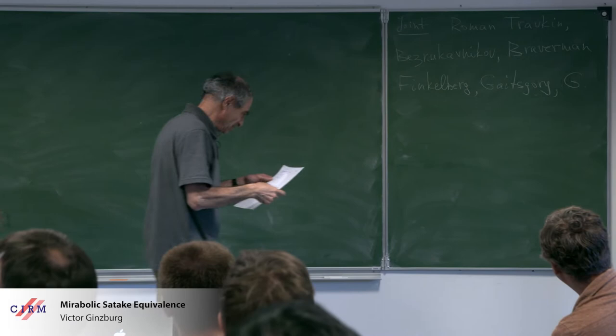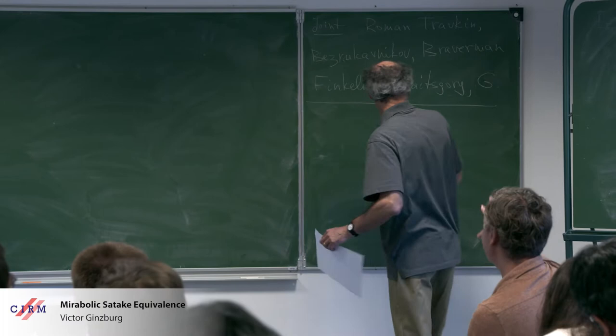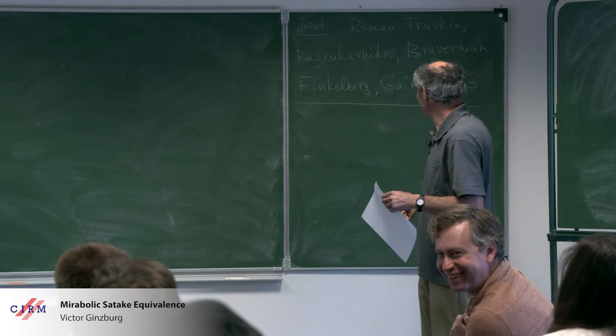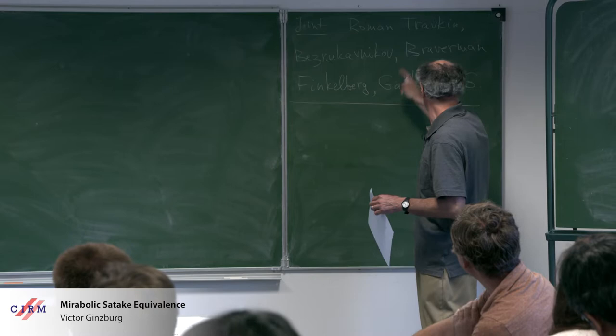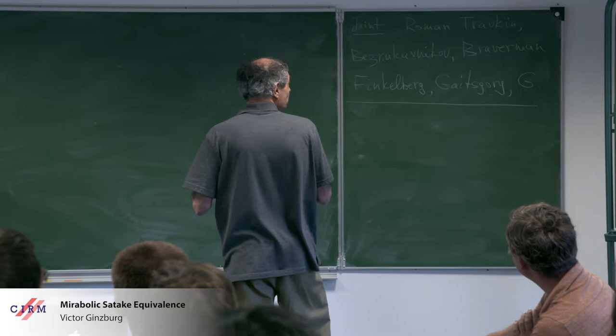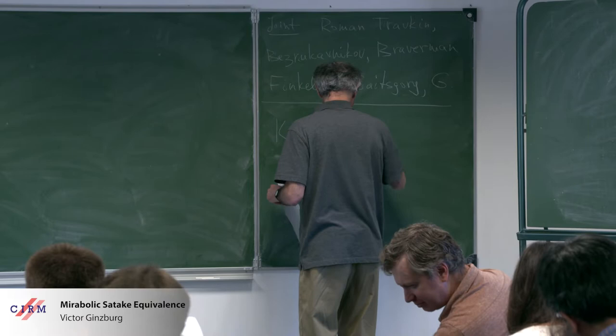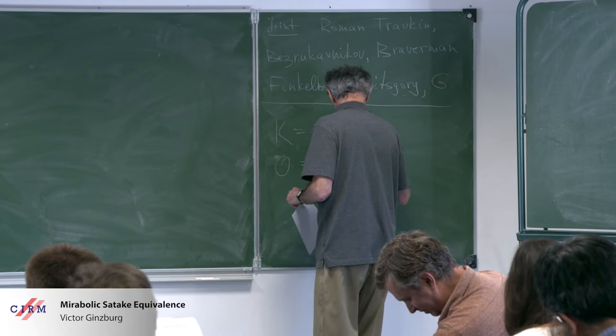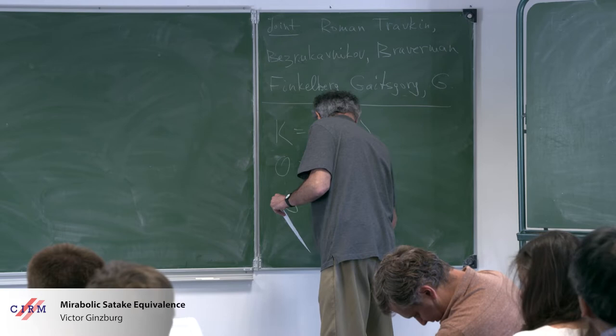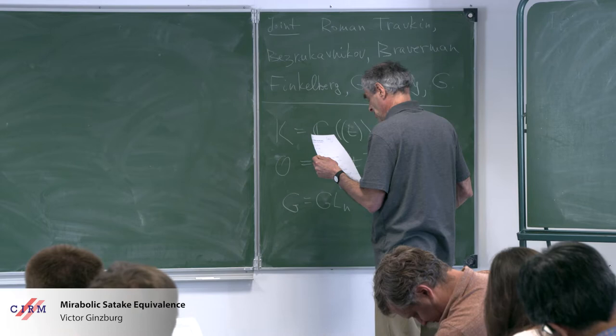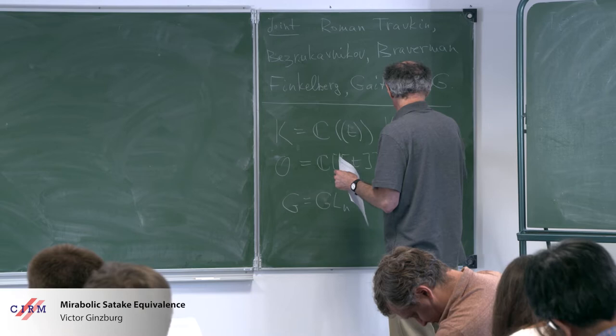Let me introduce standard notation. So capital K is the field of Laurent series. O is the ring of integers in there. G is always GLN. We'll be interested in N-dimensional vector spaces.